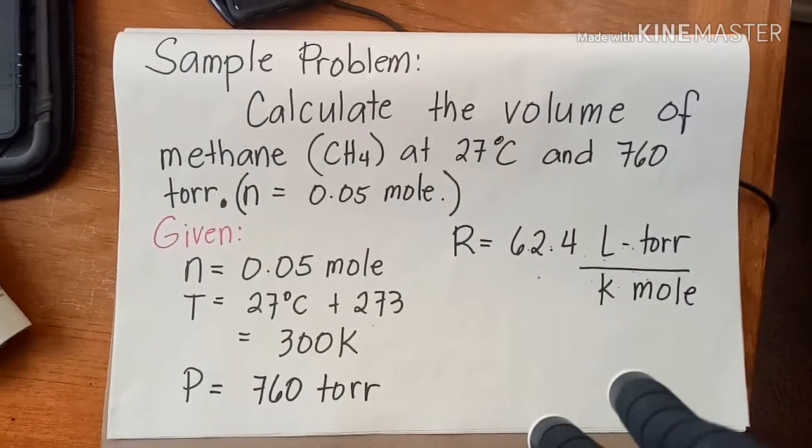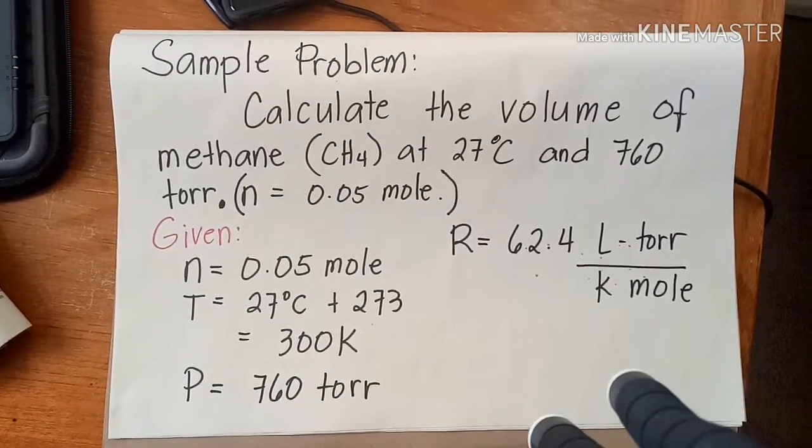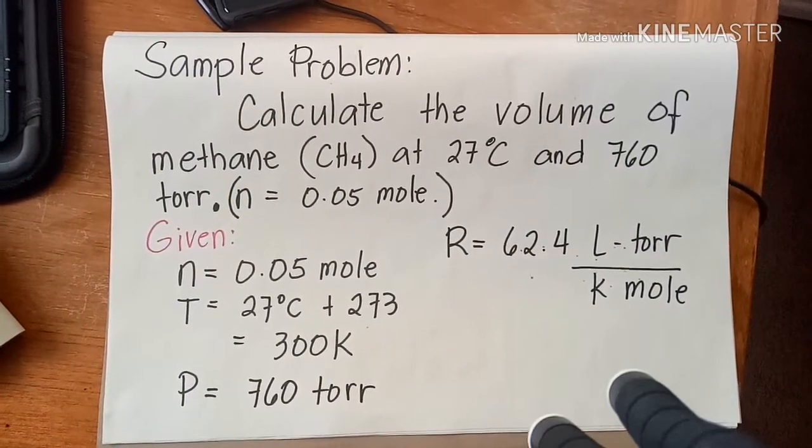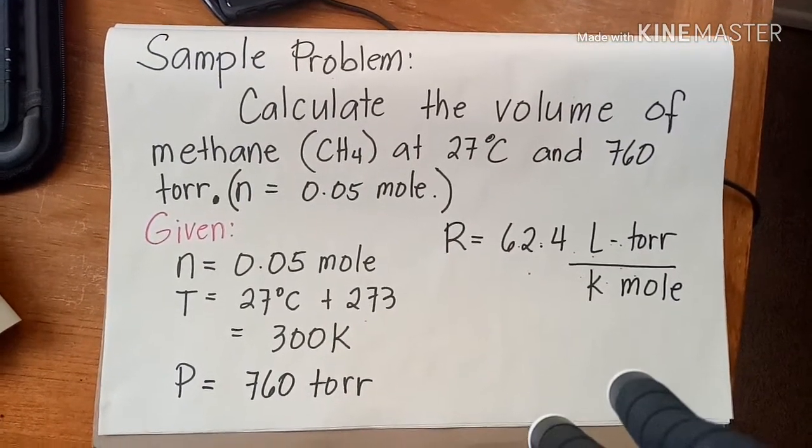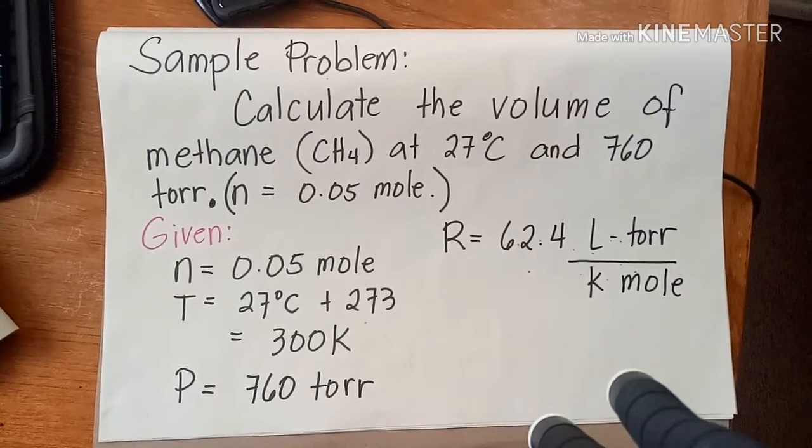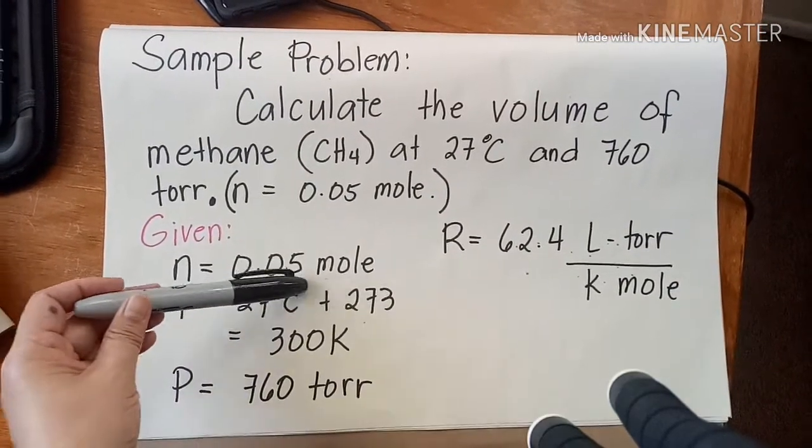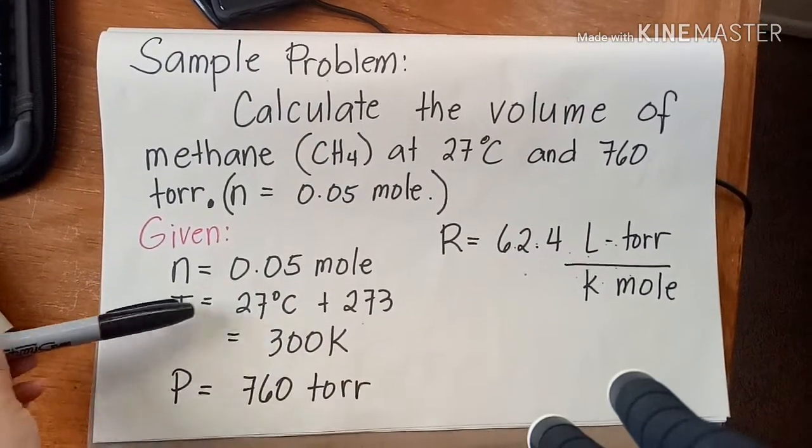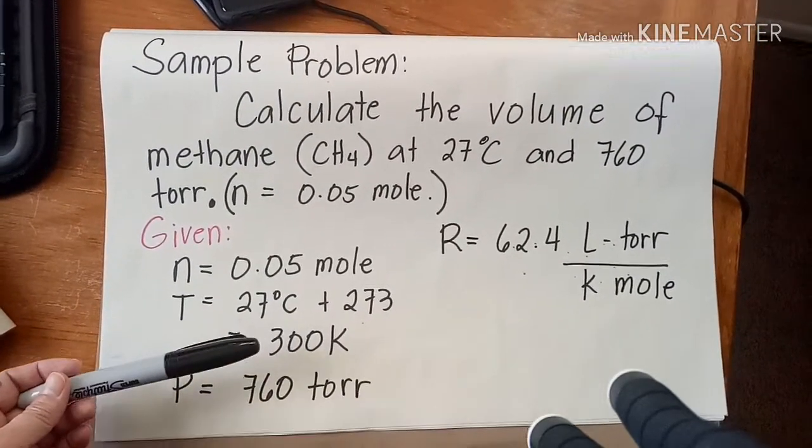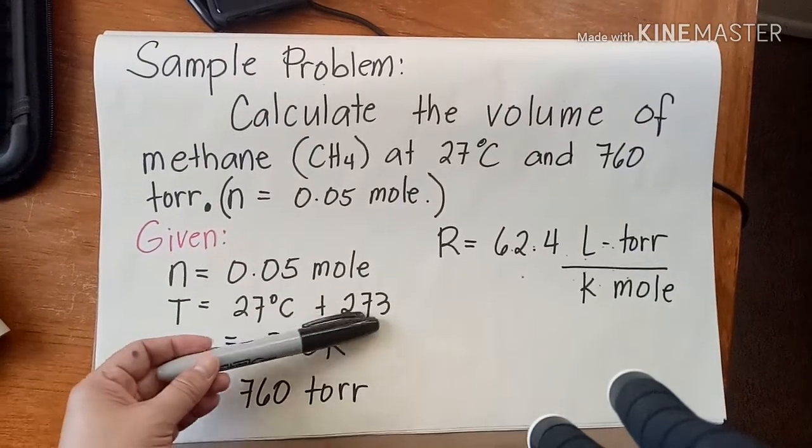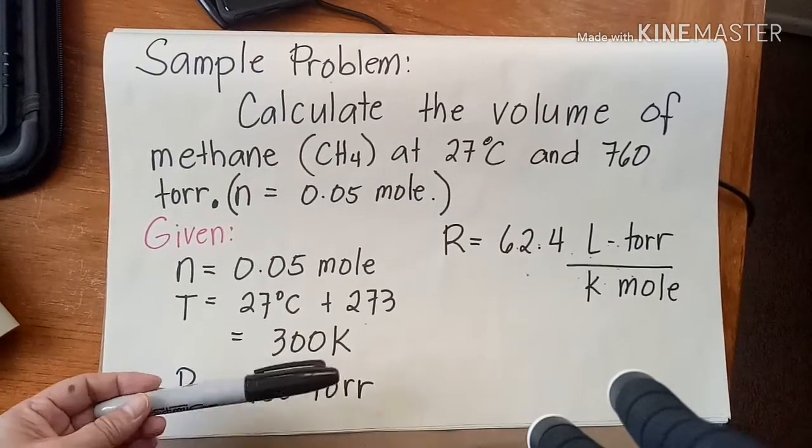So let us have application of the ideal gas law formula. Our sample problem is: calculate the volume of methane (CH4) at 27 degrees Celsius and 760 torr with a number of moles of 0.05. For the given, we have n equals 0.05 mole. Temperature is 27 degrees Celsius, but we need to convert that to Kelvin by adding 273, and you will get 300 Kelvin. And the pressure is 760 torr.